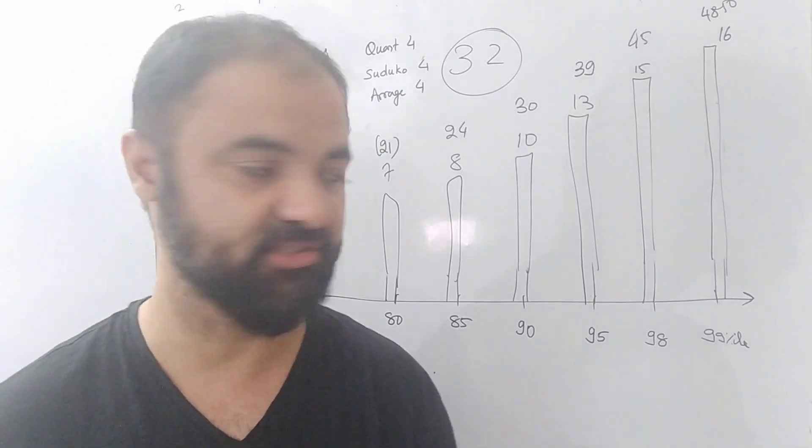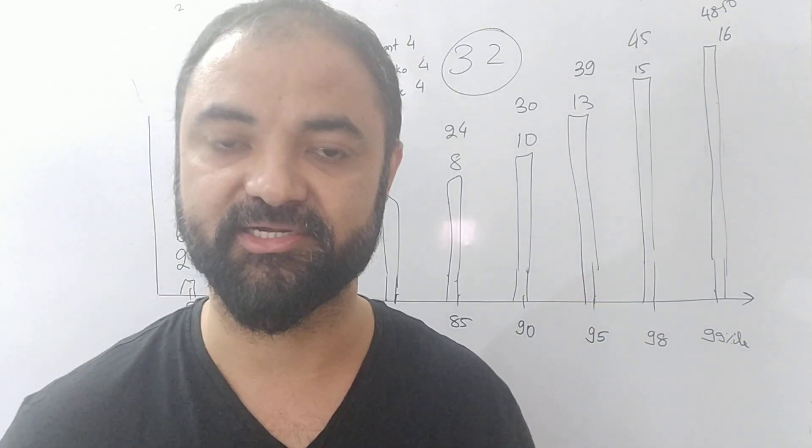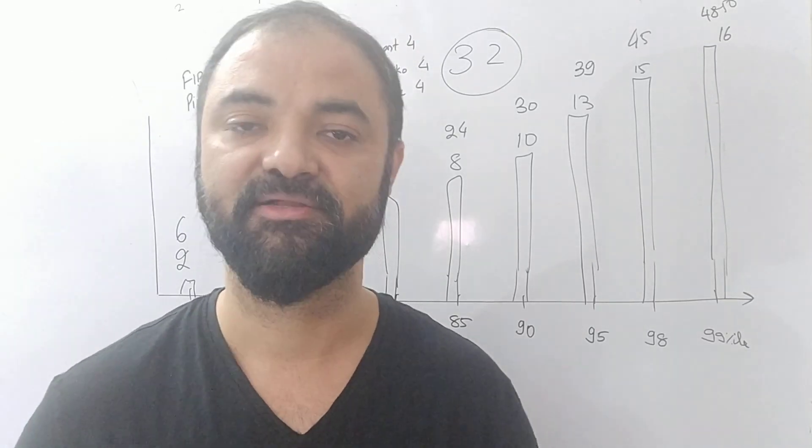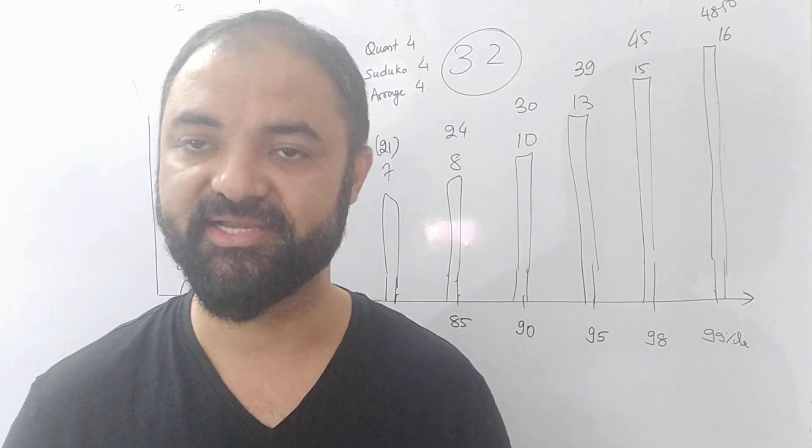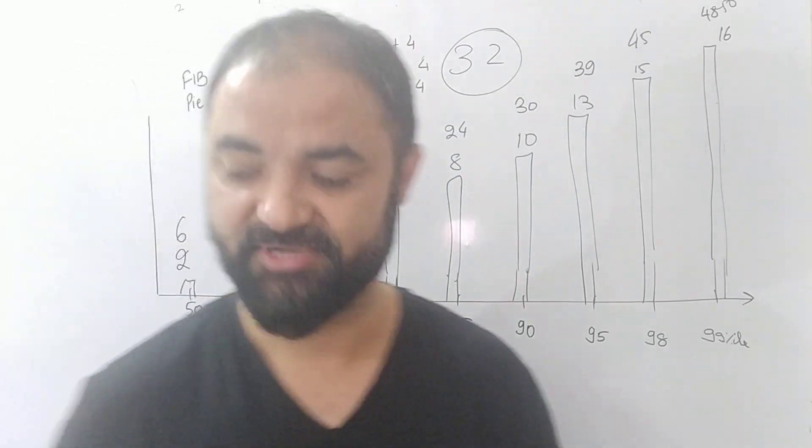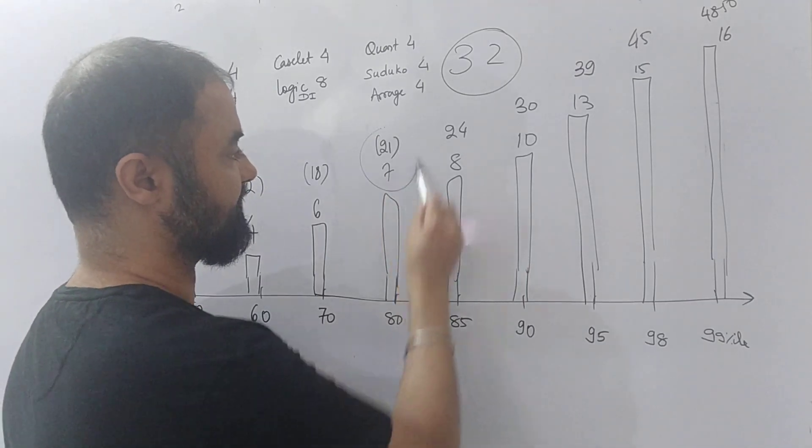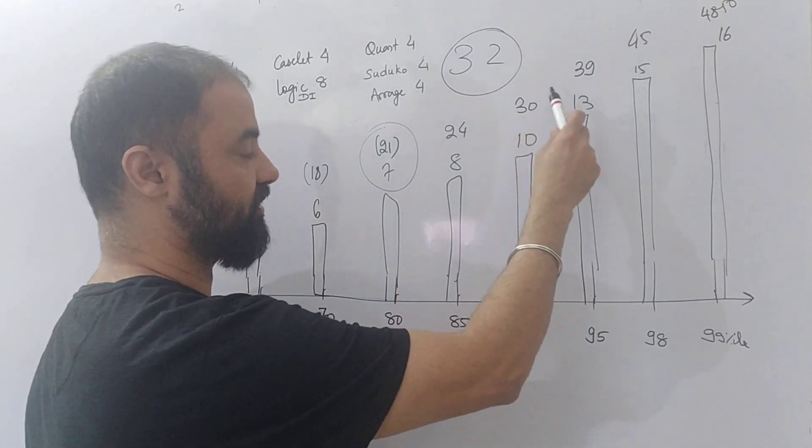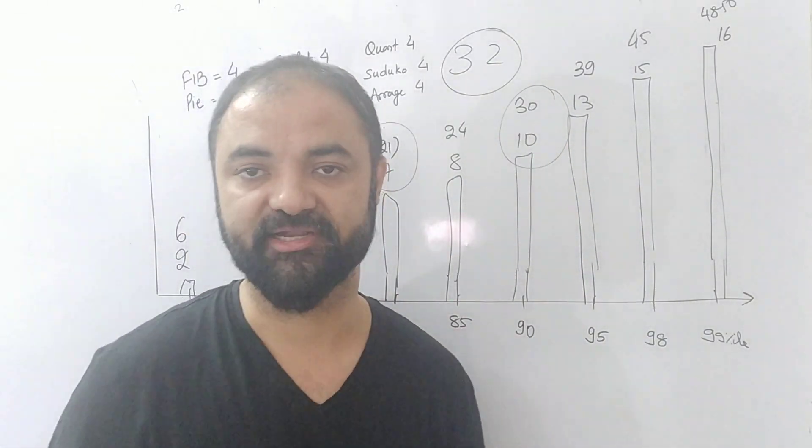But I personally feel 7 correct, 80 percentile plus will get the new IIM calls, and main IIM call will be 90 plus. So you need to score minimum 10 questions correct. Those who have scored more than 10, which is 30 marks, you can expect an IIM call, main IIM as well. So for new IIM your cutoff is 7 correct, and for old main IIM will be around 90 percentile plus, which is around 10 questions correct.